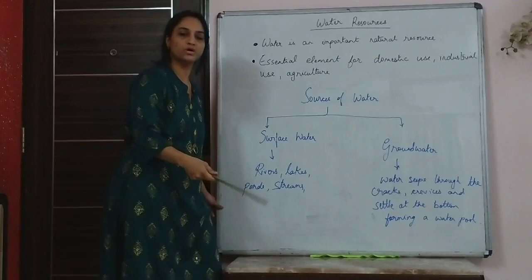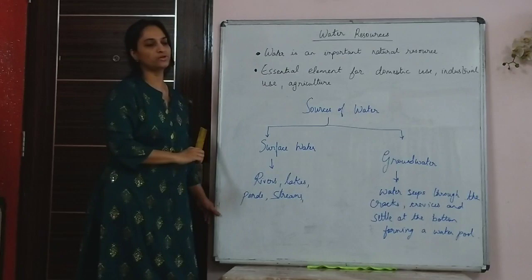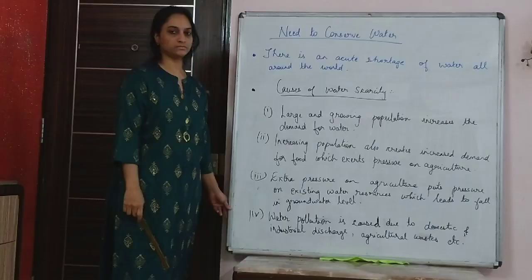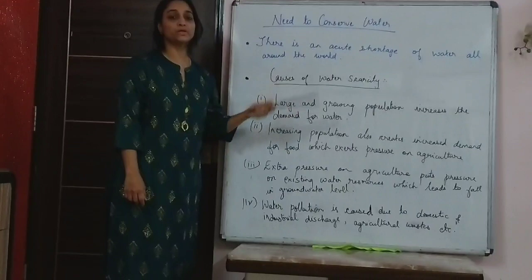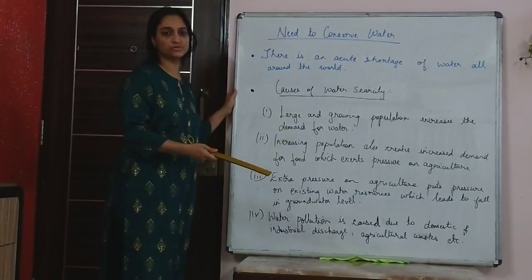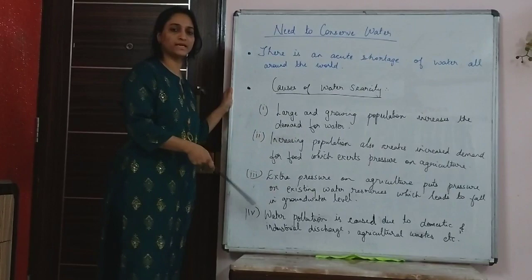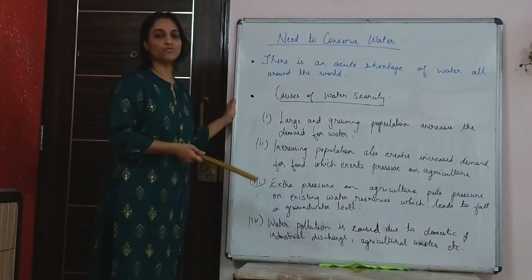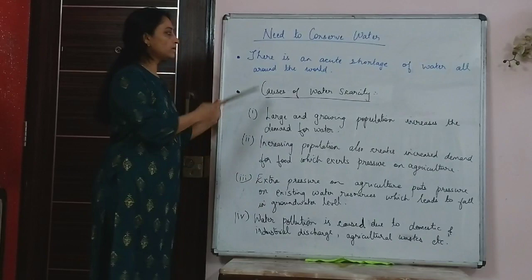Next we come to why it is important to conserve water. Water is very important for agriculture and has varied uses — domestic consumption, industrial uses, and more. It has been observed that there is an acute shortage of water. There is an acute shortage of water all around the world. When population increases, the demand for water also increases. If rainfall is not adequate, that will put extra pressure on the existing water resources.